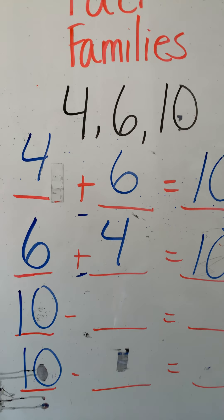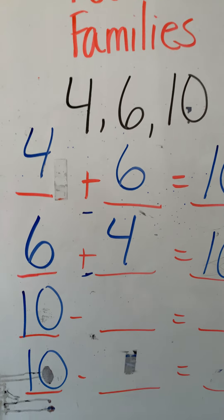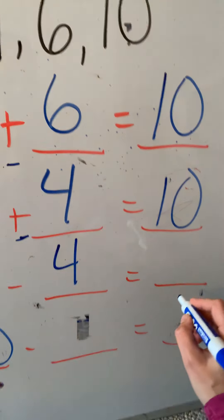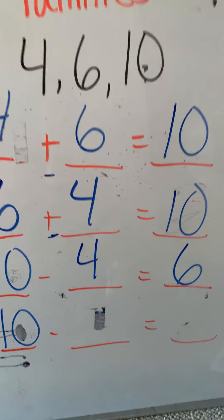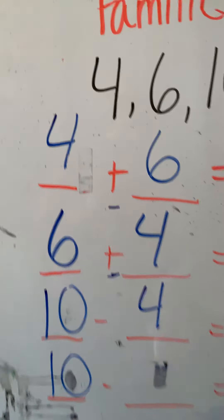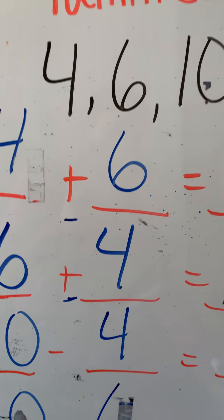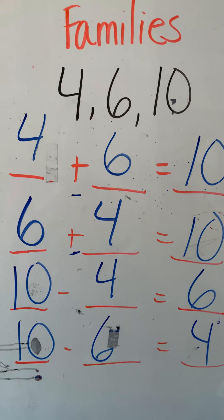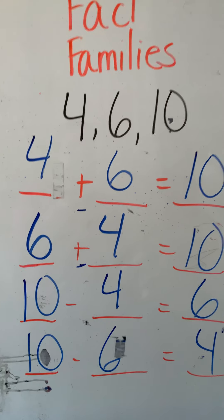And then all you have to do is what, Wyatt? Yeah, just plug the numbers in. So 10 minus 4 is 6. And what do we need to do? Make sure you flip, flip. 10 minus 6 is 4.